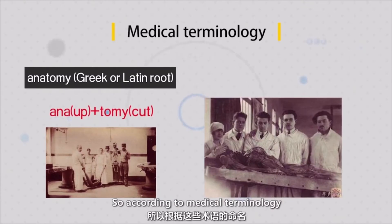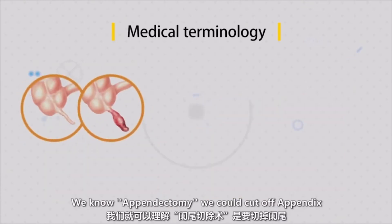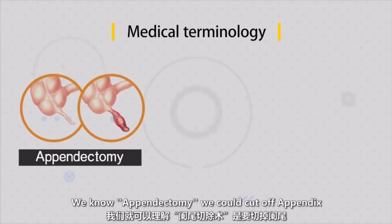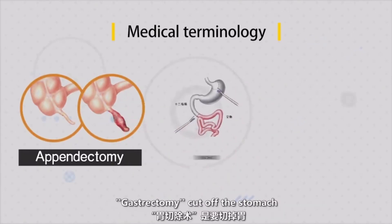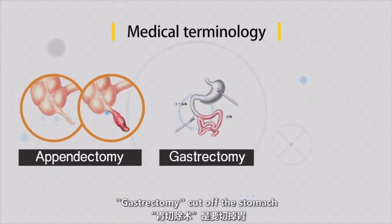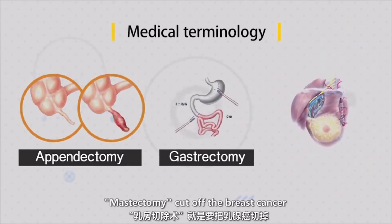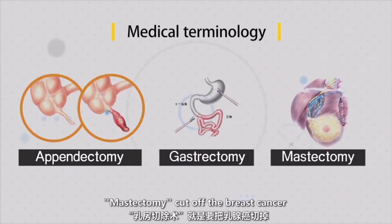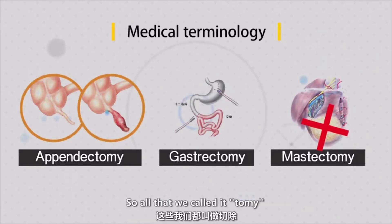According to medical terminology, we know 'appendectomy' — we cut off the appendix. 'Gastrectomy' — we cut off the stomach. 'Mastectomy' — we remove the breast. So all of these relate to what we call anatomy.